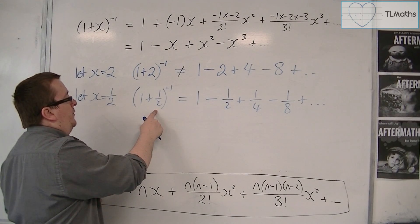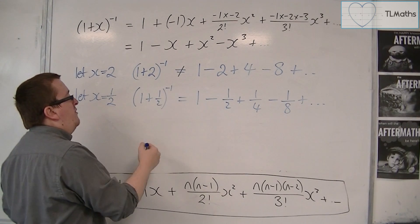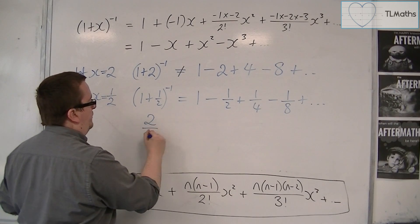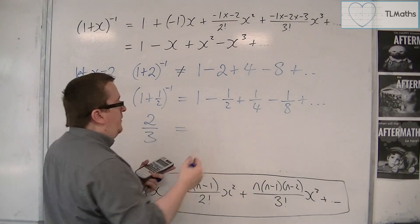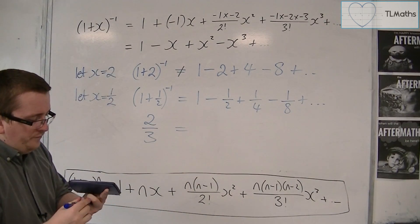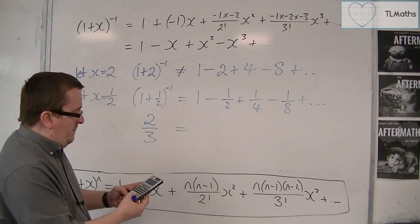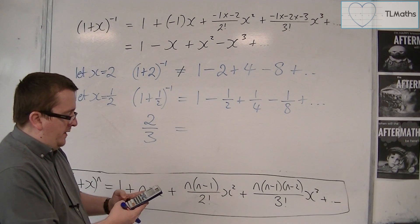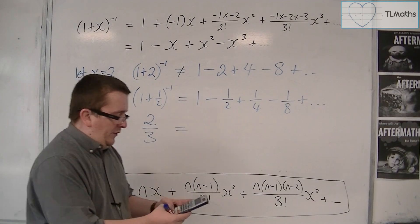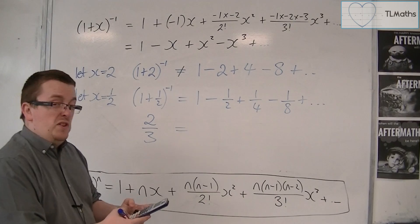So, 1 plus 1 half is 3 halves, 3 halves to the power of minus 1 is 2 thirds. Now is this equal to 2 thirds? If you try this on a calculator, starting off with 1, then take away 1 half, press equals, then plus 1 quarter, press equals, so you get 3 quarters.